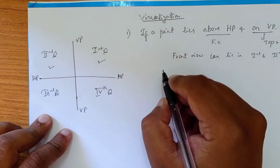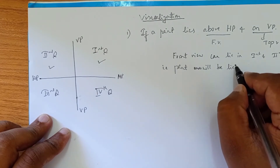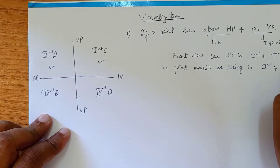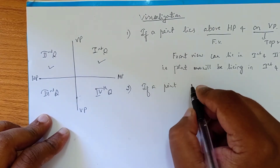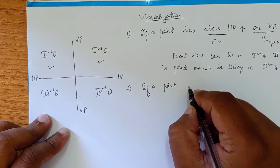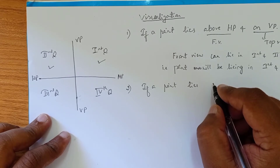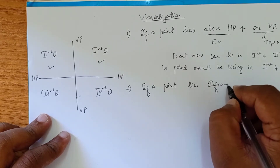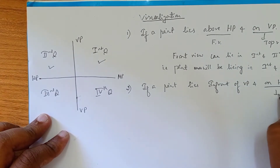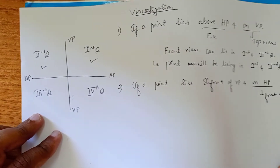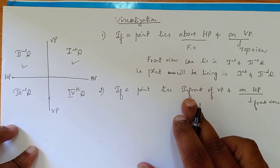So the point will be lying in the first and second quadrant. Now the second concept: if a point lies in front of VP and on HP, then 'on HP' means it is the front view.